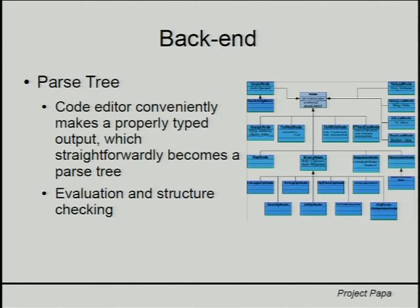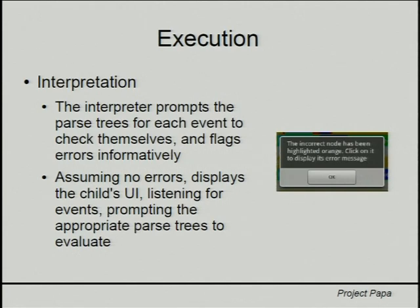The parse tree consists of several types of node, which have their own methods for evaluating themselves and their children as appropriate, as well as checking their own structures to ensure that there are no gaps, which is something that the code editor cannot prevent. We also provide a runtime storage system to maintain state. When the program is handed over to the interpreter for execution, it prompts all of the parent nodes of all of the different methods attached to each event to begin a structure check to make sure there are no gaps that would damage execution.